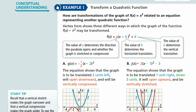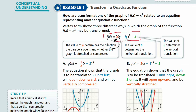So how are transformations of the graph of f(x) = x² related to an equation representing another quadratic function? The vertex form shows three different ways in which the graph of f(x) = x² may be transformed. Please make a note of this vertex form because it's very important and useful.